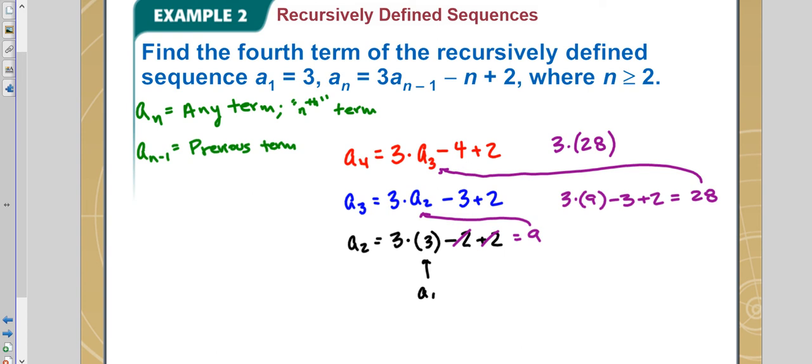Then we minus 4, which is 80, and then we add 2. So we get 84 minus 4 is 80, add 2, so we get 82. That would be the fourth term. So a sub 4 would equal 82.